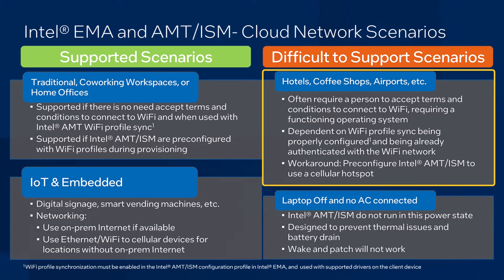For instance, let's say you've been on a plane working on a presentation and you've run into a problem preventing Windows from working properly. You think to yourself, there's Wi-Fi at the airport — I can use that to get help. The problem is that if you can't use your laptop to connect to the airport Wi-Fi, there's not going to be a chance to have Windows synchronize the Wi-Fi settings to Intel AMT or ISM. In these cases, we recommend pre-configuring Intel AMT or ISM to be used with a mobile hotspot.